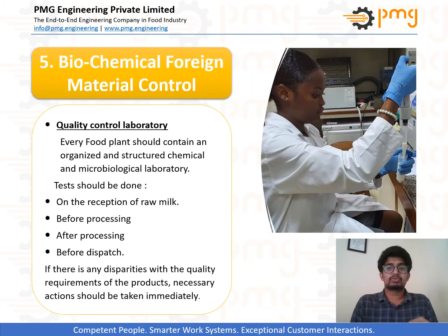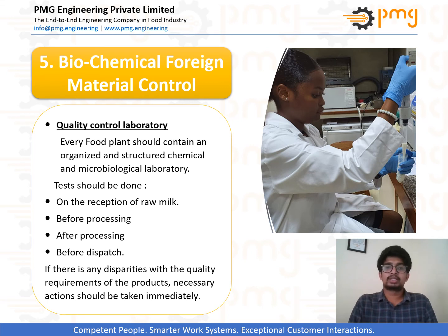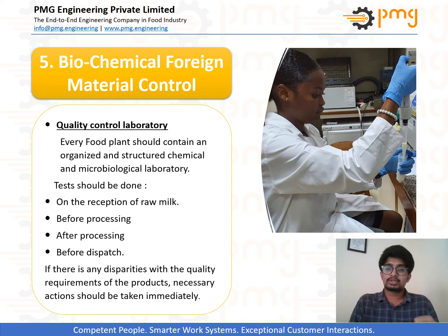Next we move on to biochemical foreign material control. Usually every food plant contains single or multiple quality control laboratories to test the quality of material at each stage of production. The intensity of quality inspection depends upon the criticality value and the probability of contamination or risk caused by the hazards.